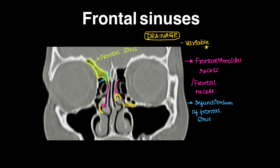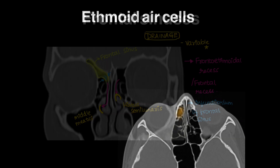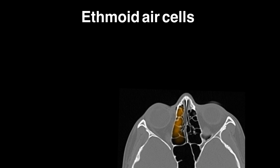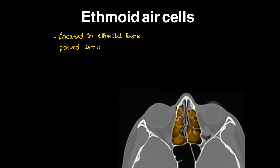We can also see the hiatus semilunaris and the middle meatus on this section. Coming to ethmoid air cells — again, paired cells on either side, left and right, located in the ethmoid bone itself.